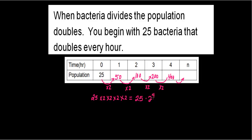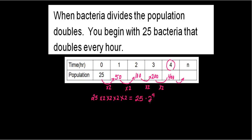This exponent 4 corresponds to your fourth hour. So now I have found an expression to calculate how many bacteria I will have at the end of the fourth hour. Notice this expression has the initial amount — the amount of bacteria at time zero — and it has this base, which we call the multiplier.